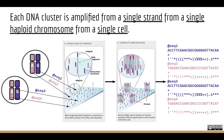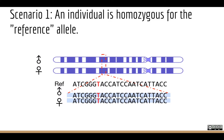We take that FASTQ file, align all that data to the reference genome, and variant detection tools start at the beginning of chromosome one and march along, looking at sequence alignments to ask: is there evidence for true genetic differences in this individual versus the reference genome? One of the biggest challenges is distinguishing true genetic variation from artifacts like sequencing error.